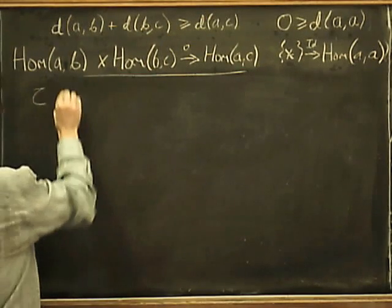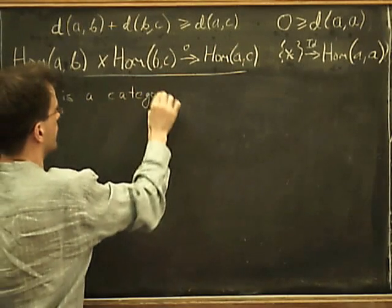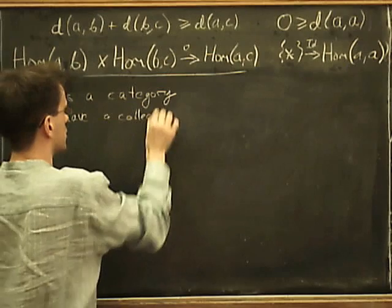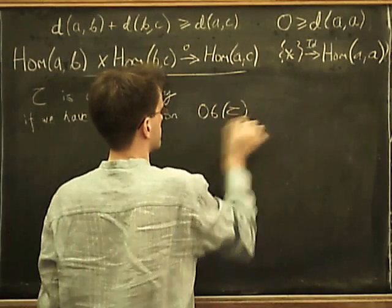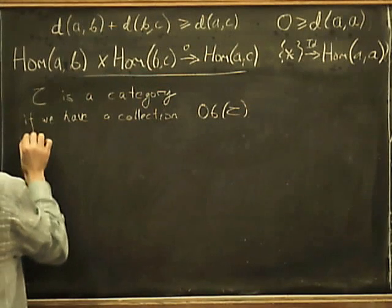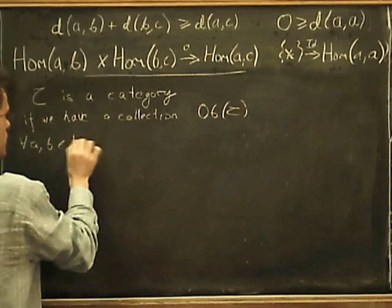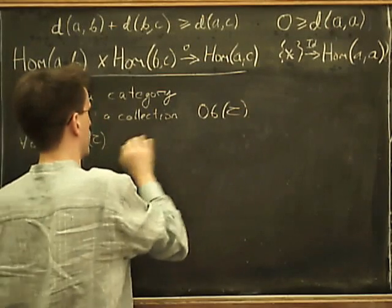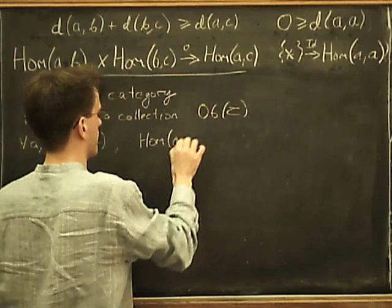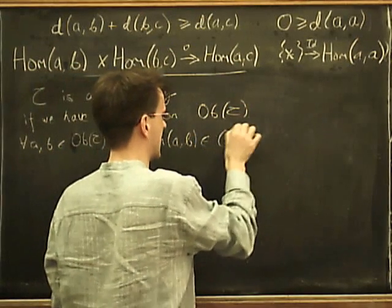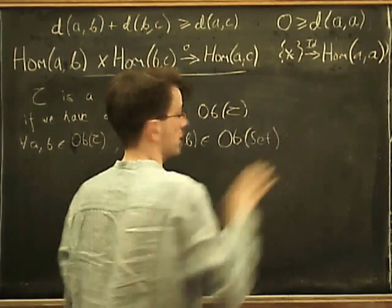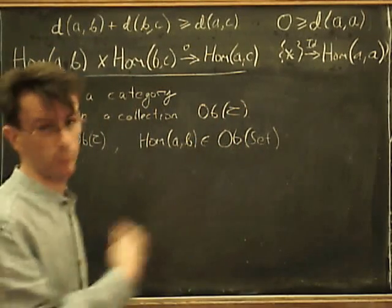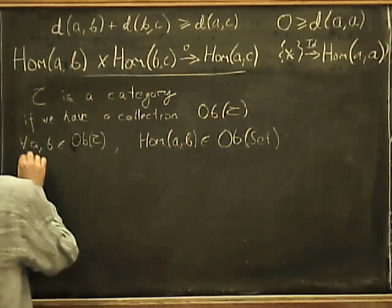Right. So C is a category. If we have a collection of objects and we have for all pairs A and B in the objects of C, we have a homset, so hom(A,B). So that's supposed to be a set. So I'll just write that as an element in the objects of the category of sets. It sounds slightly perverse. I just want to say that's a set, but obviously this is how I'm going to generalize. So I've got a reason for writing it like that.